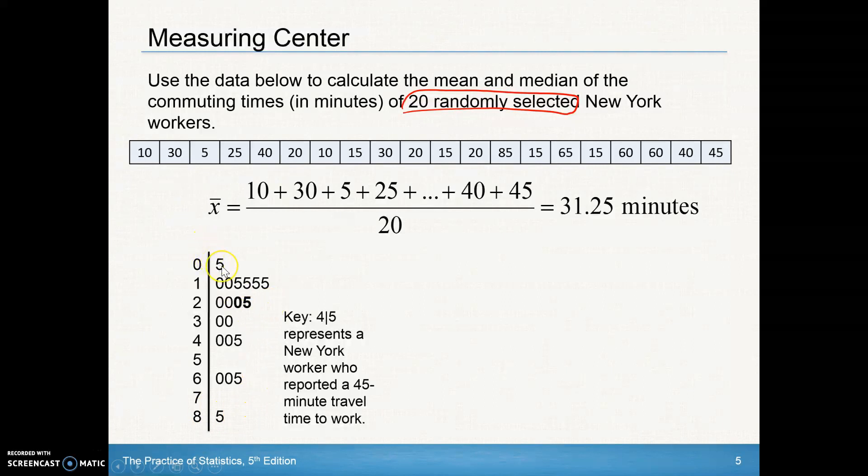You can count from the outside in, or knowing there are 20 values, count in 10 from each side. You end up with two numbers in the middle: 20 and 25. To find the median, add them up and divide by 2 to get 22.5.